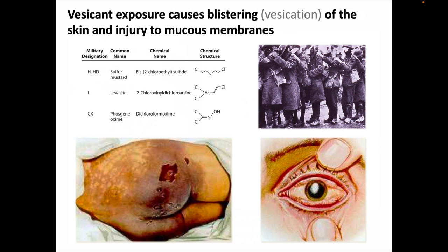Exposure to vesicants causes blistering, or vesication, of the skin and injury to mucous membranes. Here's a photo and two watercolor illustrations from World War I showing sulfur mustard exposures. In the photograph we see a long line of soldiers whose eyes were injured by sulfur mustard vapor, needing to hold on to the shoulders of the man ahead of them — literally the blind leading the blind. The typical course was only temporary blindness, and their corneas would recover. This shows the great power of sulfur mustard in causing casualties rather than only deaths. A dead soldier uses up very little supplies and effort compared to the time, effort, and care needed for an incapacitated soldier — so from a military economic perspective, this result is ideal, and sulfur mustard was known as the king of the war gases.